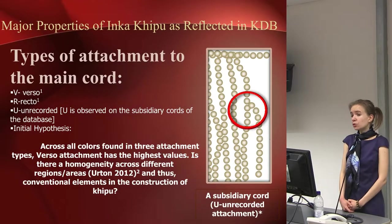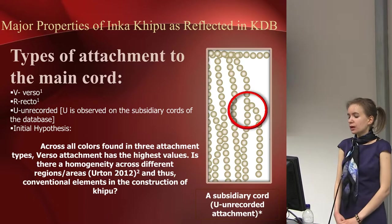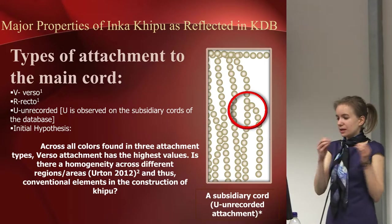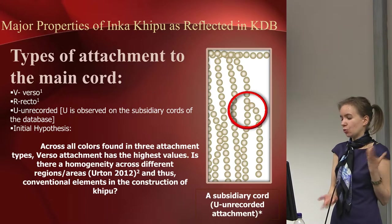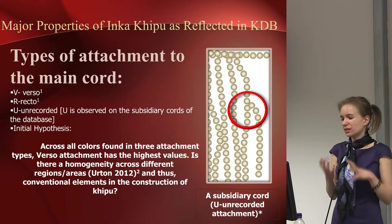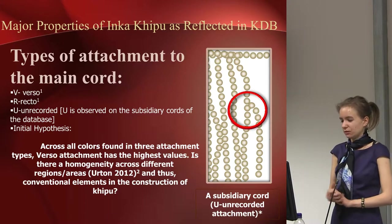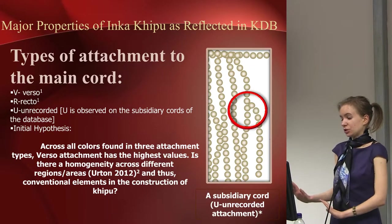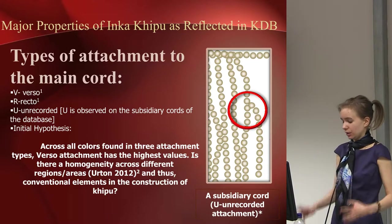There are so-called sub-cords — little cords attached to other cords — coded as U in the kipu database. U means unknown because it's sometimes hard to read what they mean, and there is a big debate in kipu studies about what the unknowns are and how to count them. For statistical purposes, I will still include them in the sample.